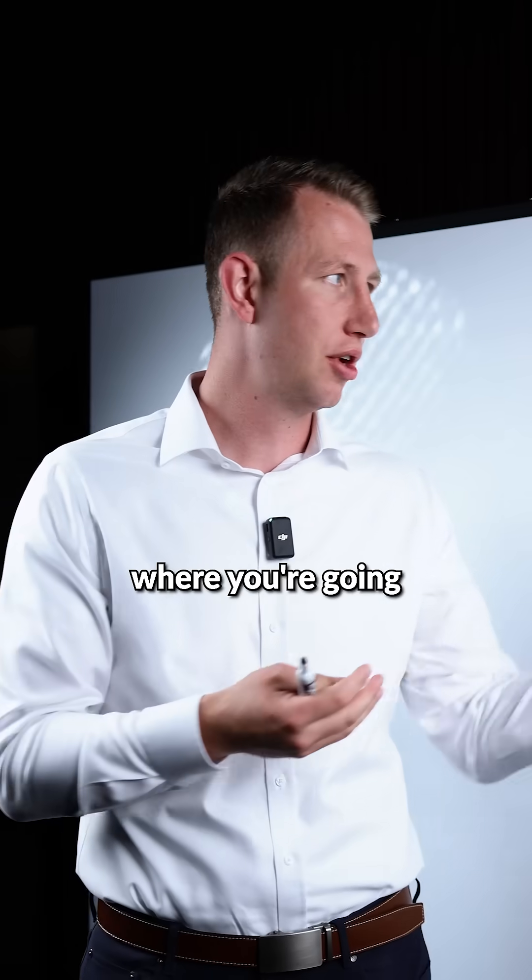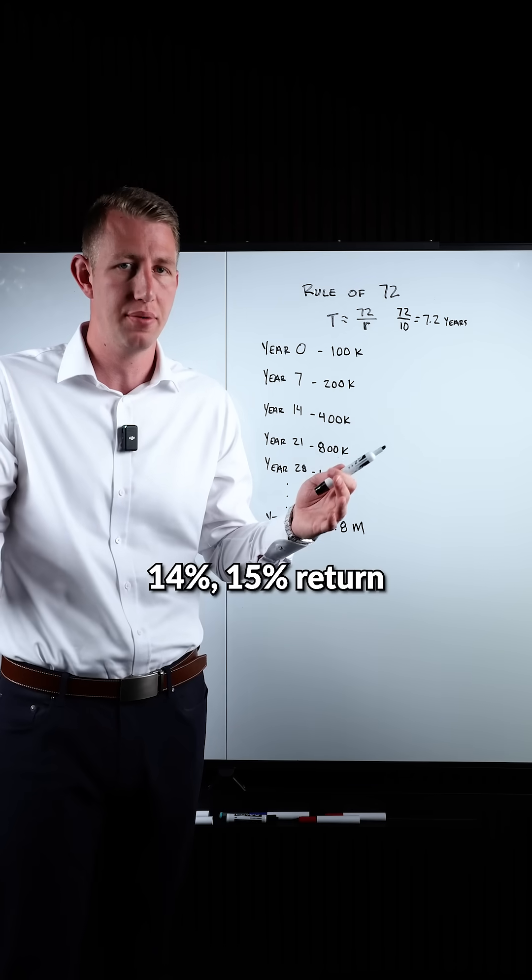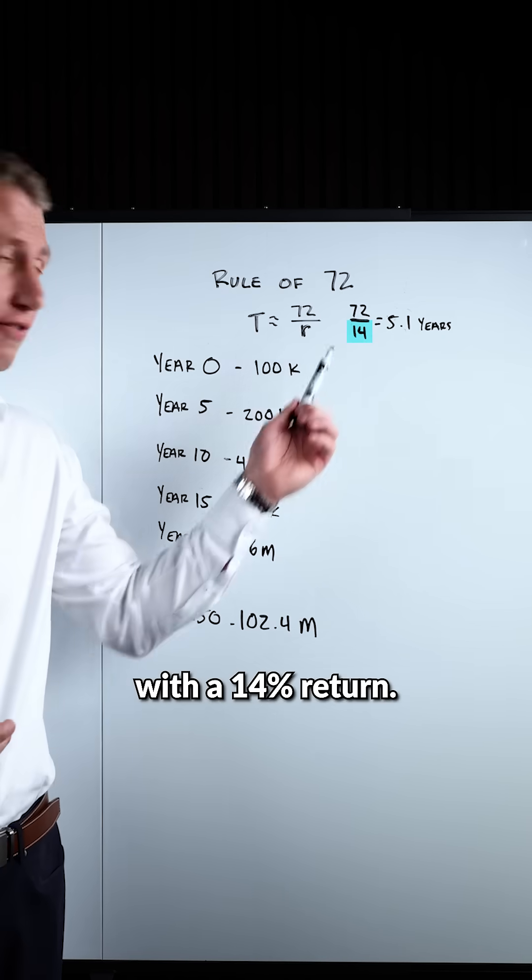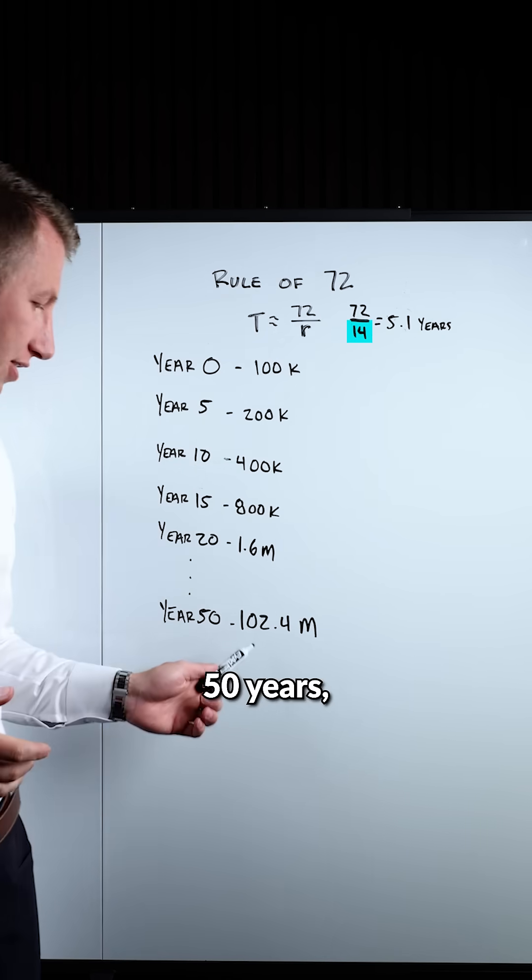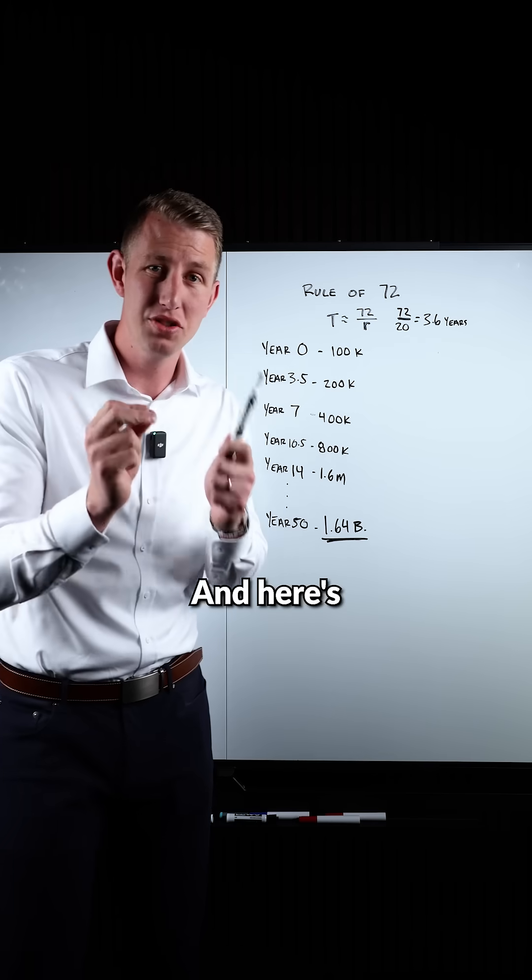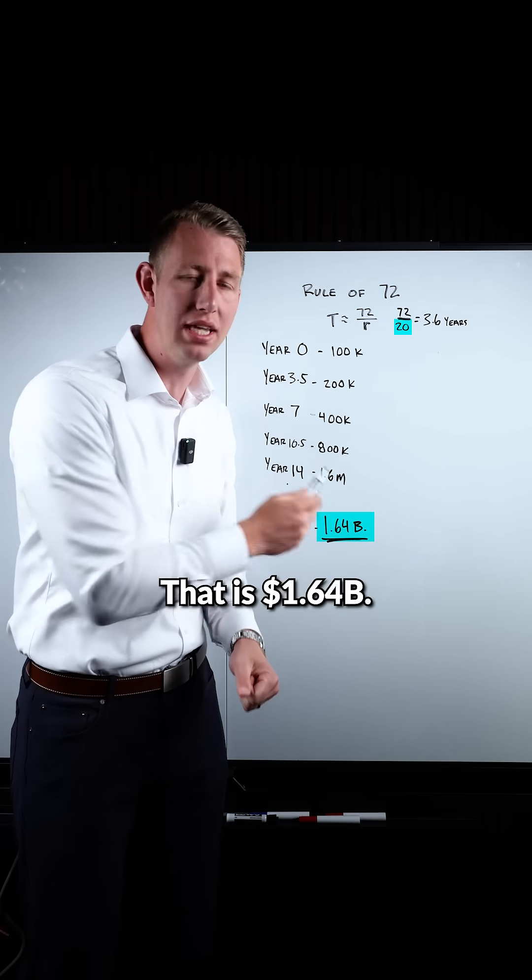This is the stock market where you're going to get about a 10% return. Imagine if you can get a 12%, 14%, 15% return in stuff like real estate and other investments. This just speeds up. Here's what it looks like with a 14% return - in the same 50 years, you now end up with $102 million. And here's what it looks like with a 20% return. That is $1.64 billion.